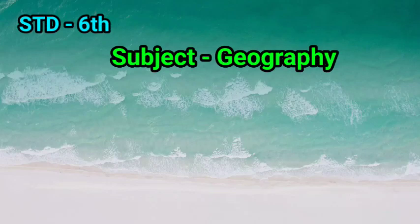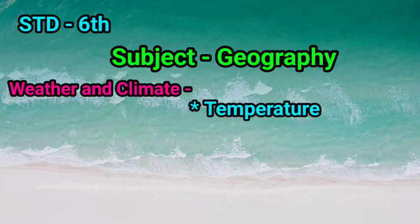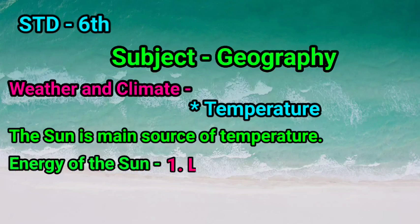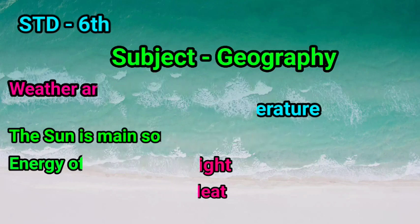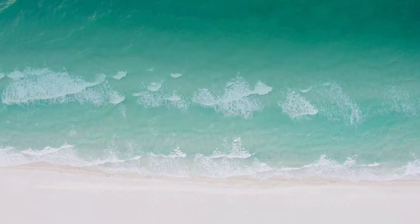Hello children, how are you all today? We are going to learn geography. In our last lesson, we learned about weather and climate on the Earth, and we saw the elements that affect weather and climate. Among all these elements, temperature is considered the most significant. The Sun is the main source of temperature on the Earth, and its energy is available in the form of light and heat. In this lesson, Lesson Number Five, we will see how Sun energy affects the temperature of the Earth.